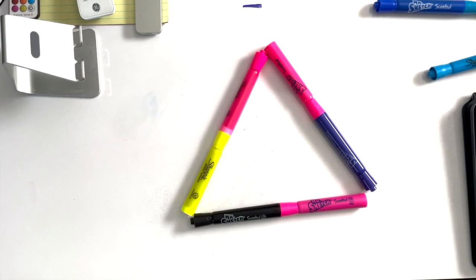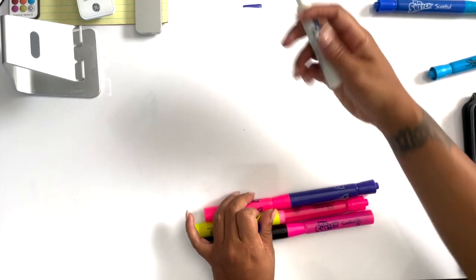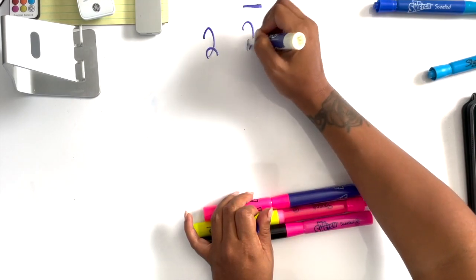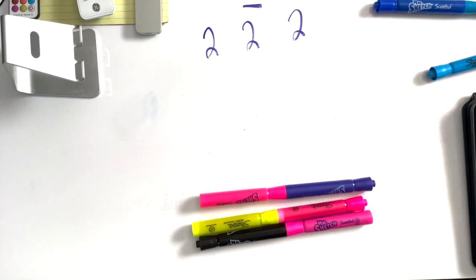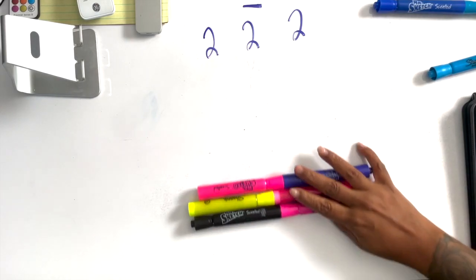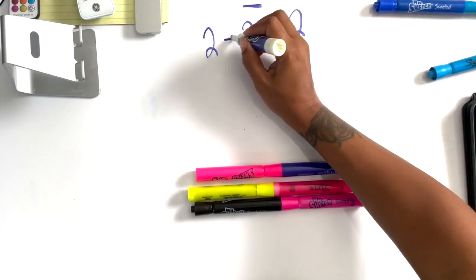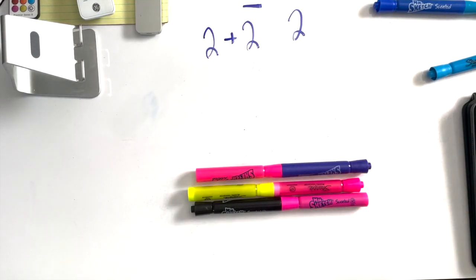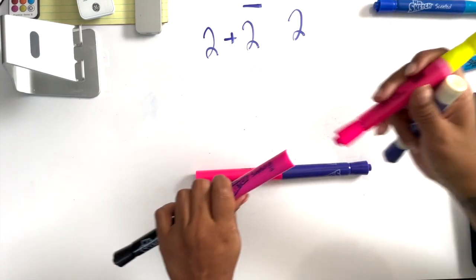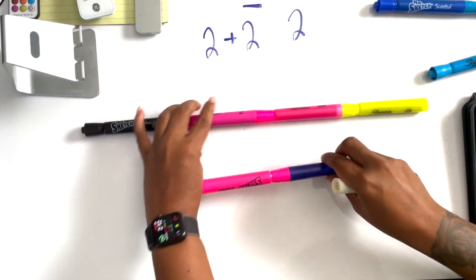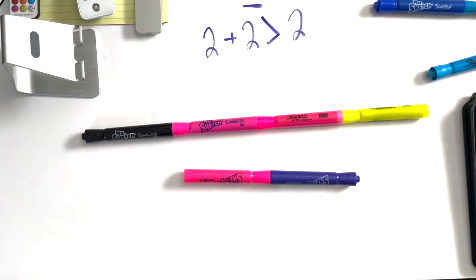They all make a triangle. So let's write those measurements down. There was two, two, and two. And what this theorem says is that if I add any two sides they will be bigger than the third. So this makes sense - if I add two of the sides together, make these two, four is bigger than the third one. That makes sense, so that's what we're gonna do.